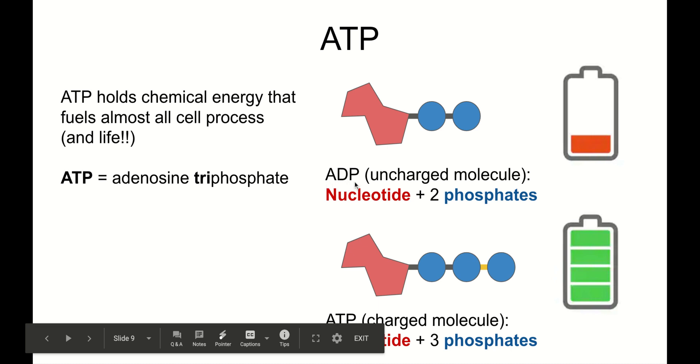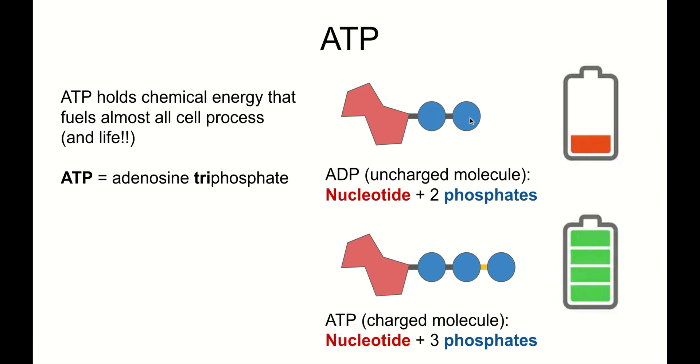ATP stands for adenosine triphosphate. This red shape is adenosine. These blue shapes are phosphates. Tri means three, so this is adenosine plus three phosphates. ADP, what could that stand for? There's only two phosphates here. Di, a prefix that means two. So this is adenosine diphosphate. Adenosine is charged with chemical energy by adding another phosphate to create ATP. To charge up ATP, like charging up a battery, all we need to do is add another phosphate onto the end of ADP.